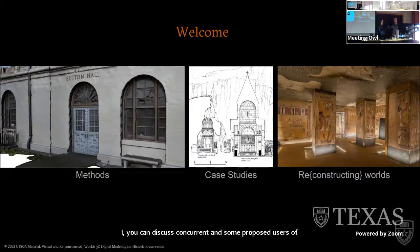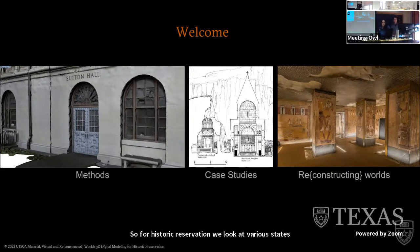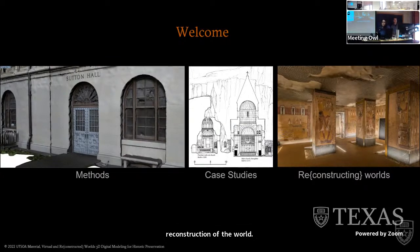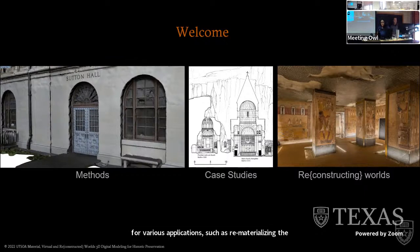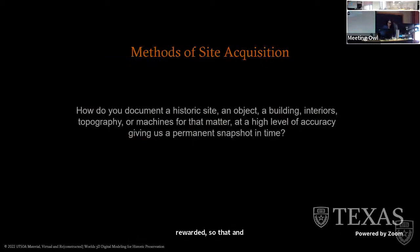In today's talk, Rob and I will discuss some current and proposed uses of this technology for historic preservation. We'll look at various scales — from that of an object to projects that attempt the reconstruction of worlds. Rob will start by explaining the process of 3D modeling as applied to some historic structures. I will continue with projects that use these models for various applications, such as rematerializing the digital, or the use of preemptive documentation in post-disaster reconstruction. And I'll end with a virtual world view.